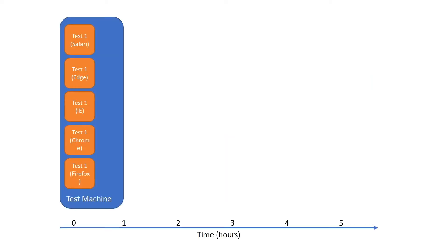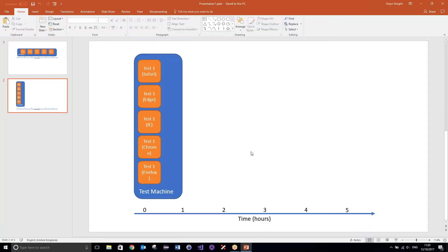Now the method that we are going to be using today is going to allow us to run in parallel, and what this means is that the tests will execute at the same time. So rather than our entire testing time taking up to 5 hours, instead we can run our tests at the same time — running cross browser tests in parallel. So the tests should now only take up to 1 hour. The parallel runner is really going to speed up our execution when doing things such as cross browser testing.